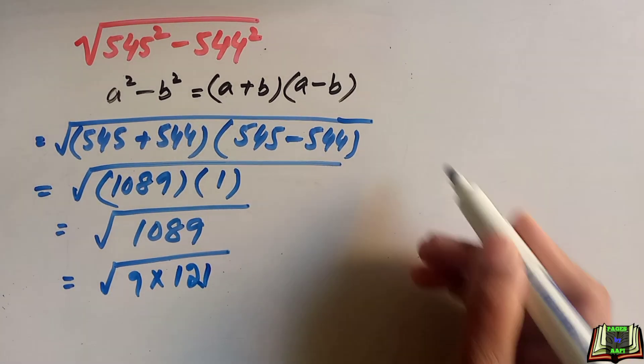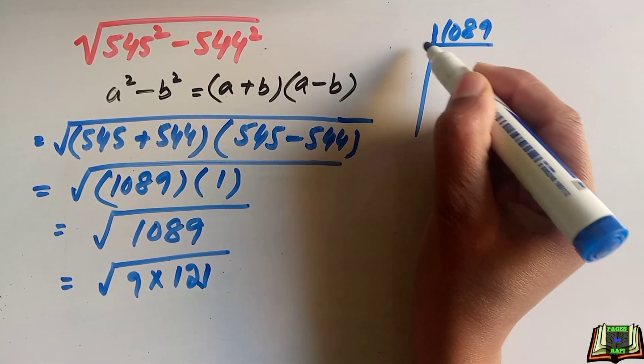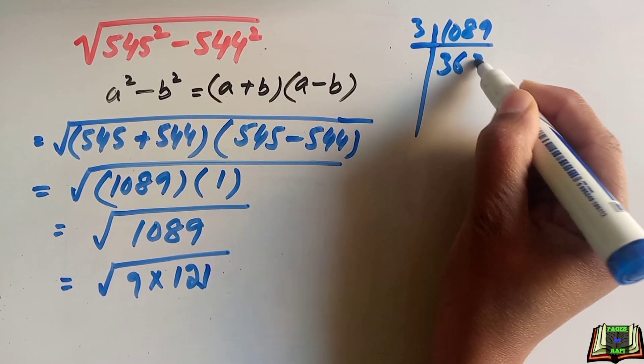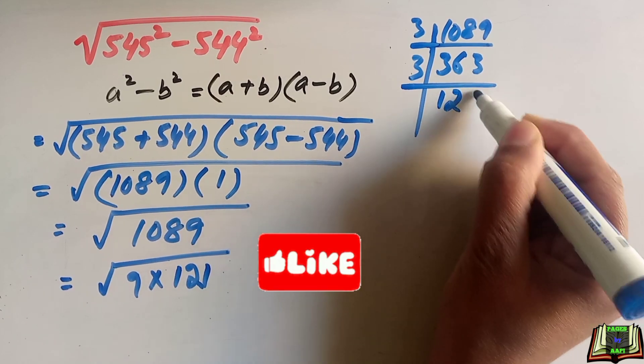We can find this by prime factorization method. 1089 is divisible by 3. So this will be equal to 3 times 3 is 9, 3 times 6 is 18, 3 times 3 is 9, 3 times 1 is 3, 3 times 2 is 6, 3 times 1 is 3. 11 times 11 is 121, and 11 times 1 is 11.